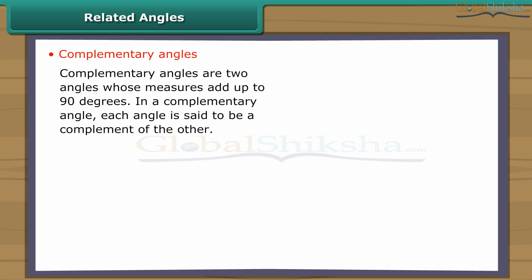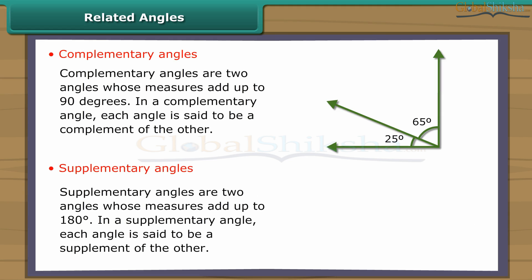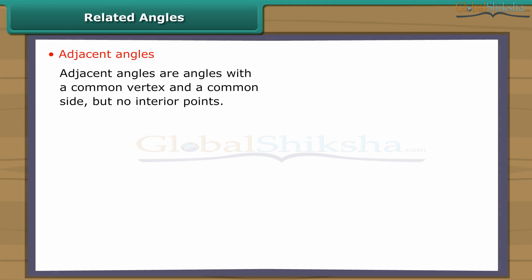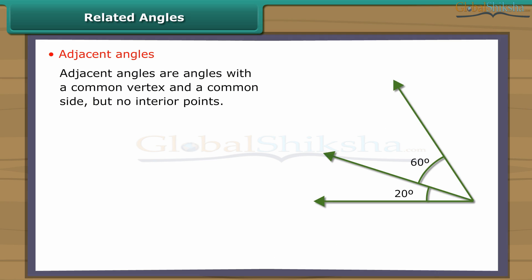Complementary angles are two angles whose measures add up to 90 degrees. Supplementary angles are two angles whose measures add up to 180 degrees. Adjacent angles are angles with a common vertex and a common side but no interior points.